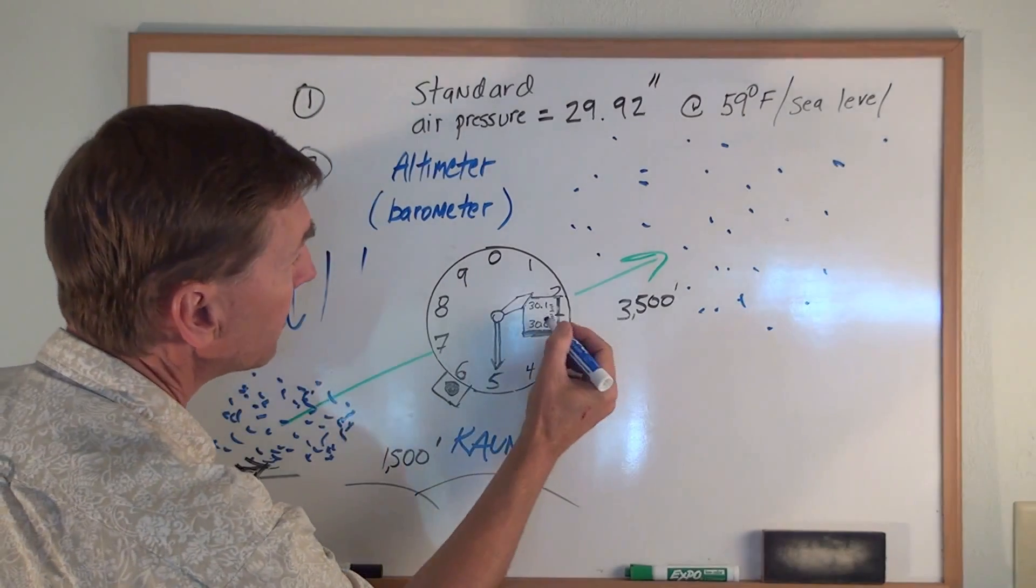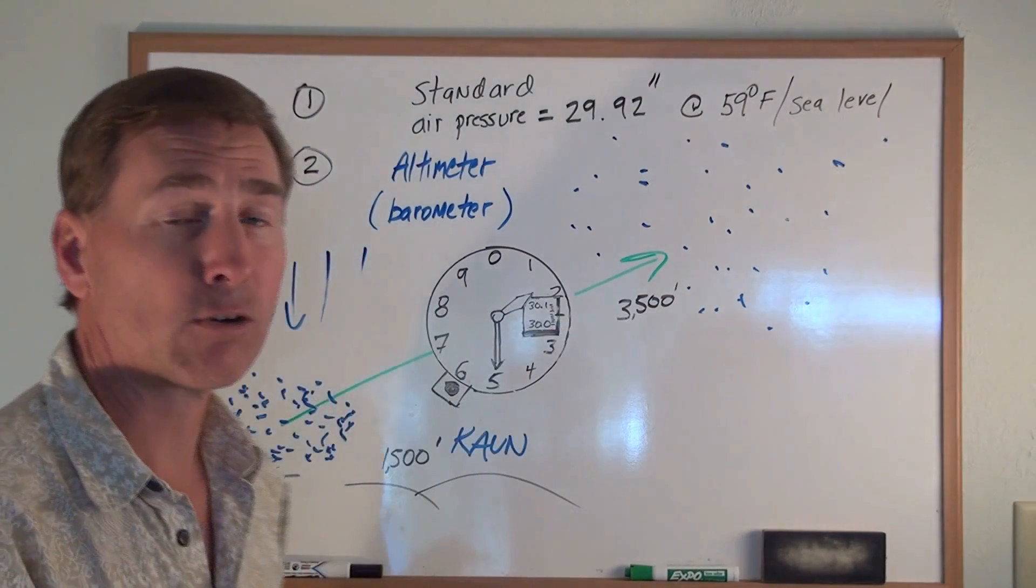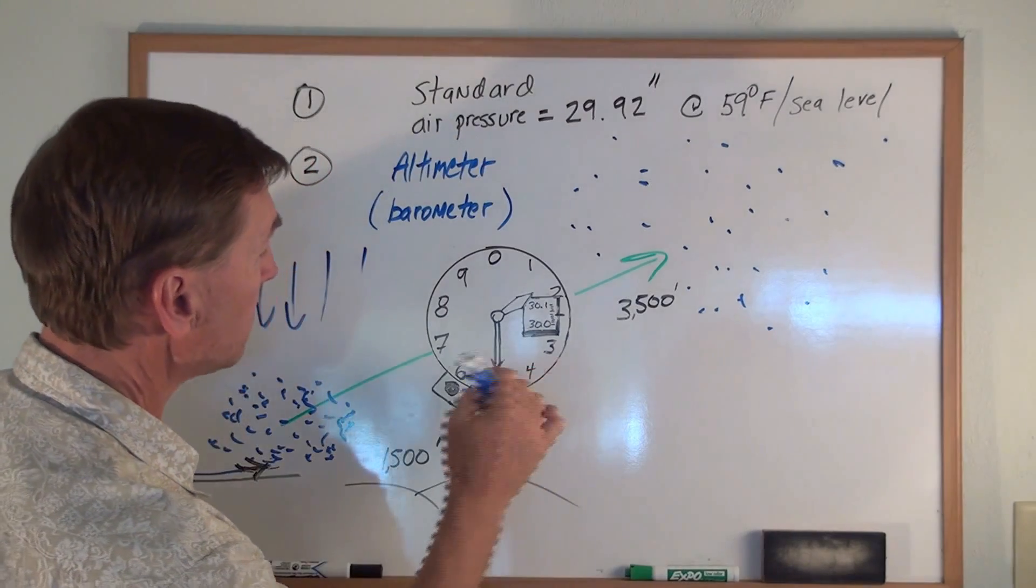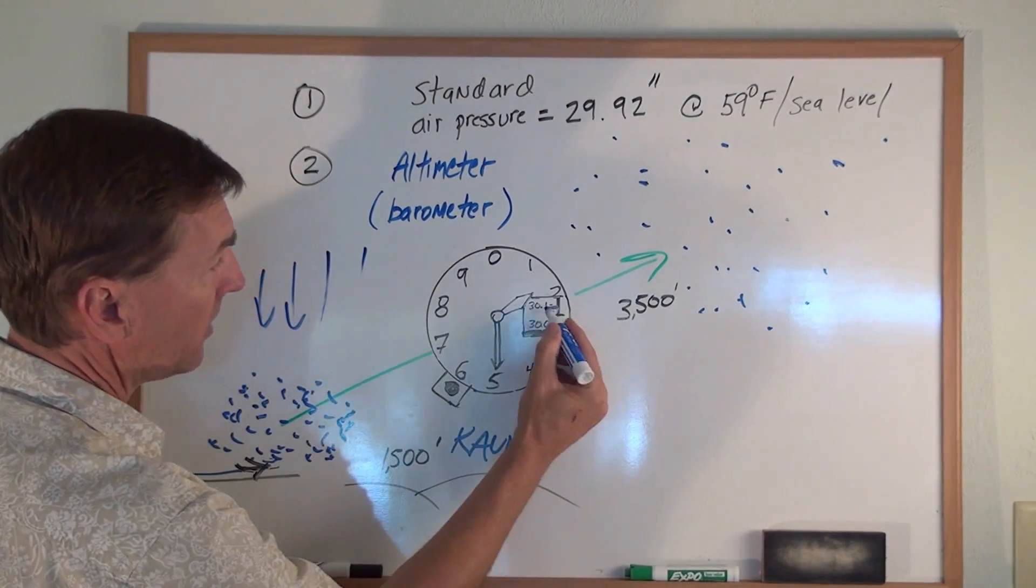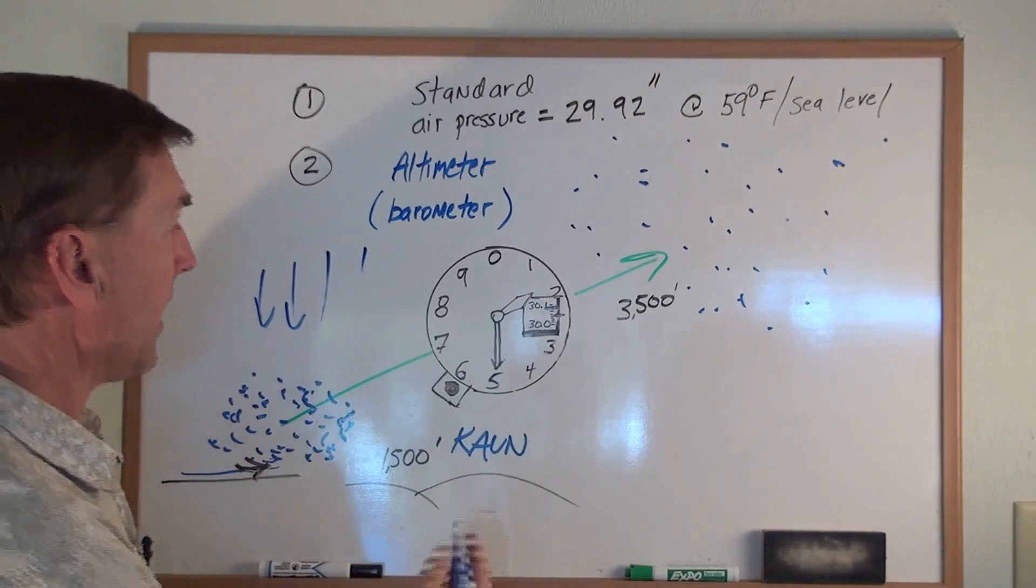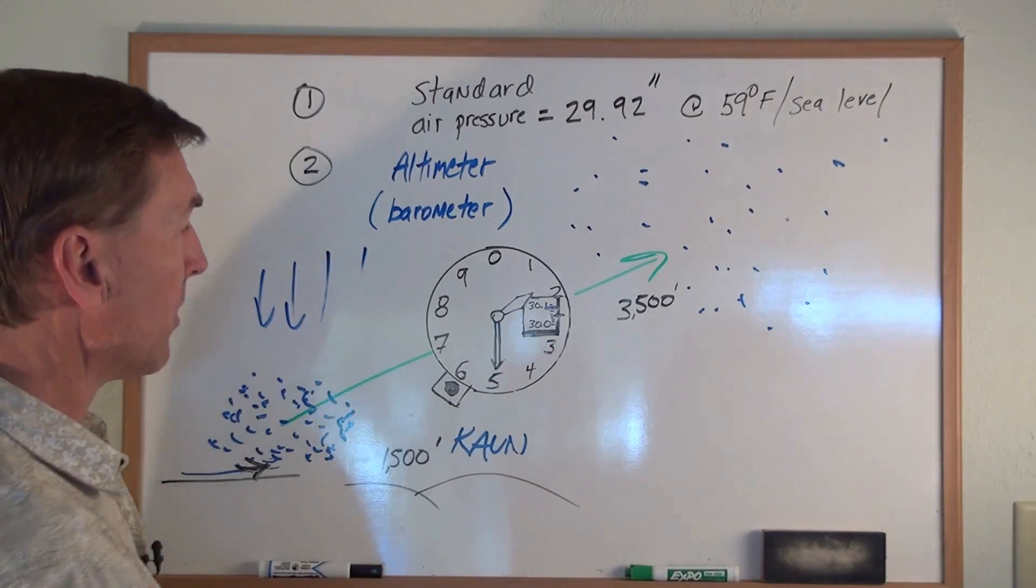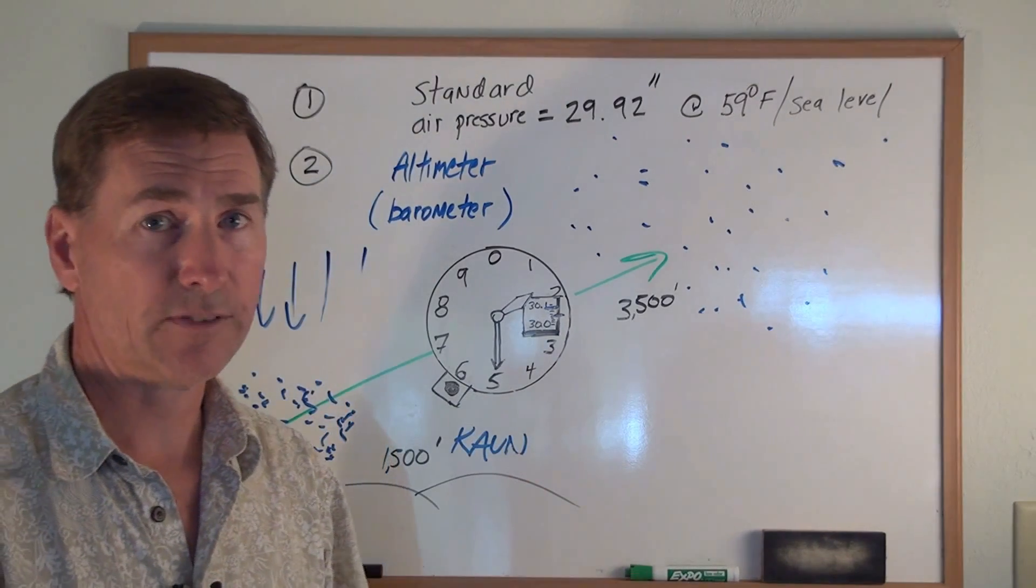I set it right in here and it said it was 30.09, and so I just simply moved this black knob right here to make it line up right here. So these two lines lined up and it then shows me it at 1,500 feet, which is our field elevation.